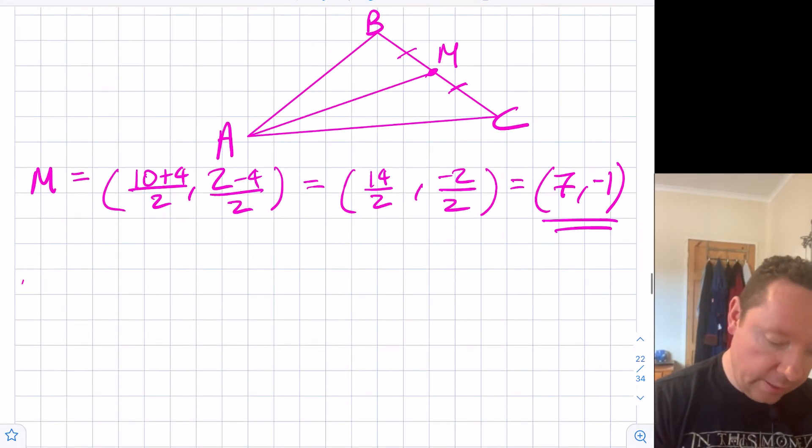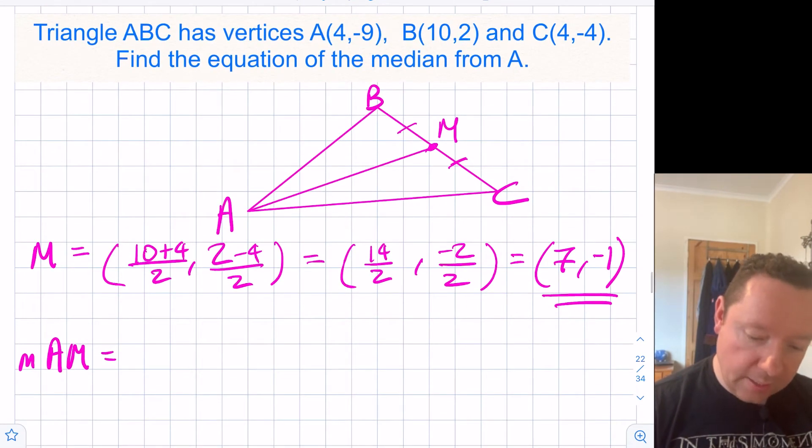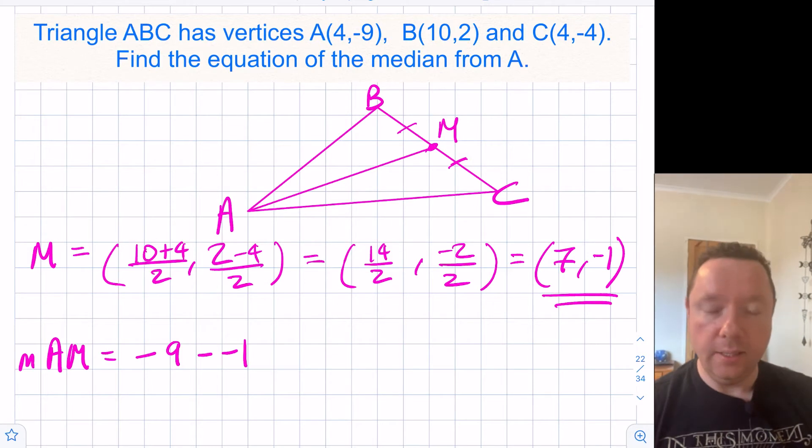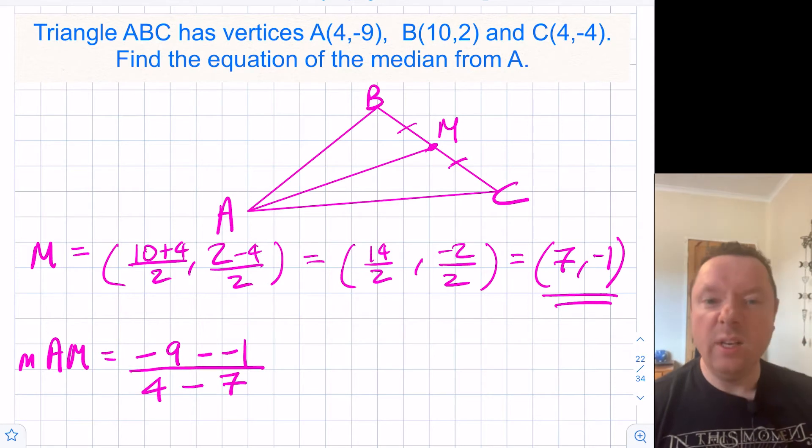So if I write this as the gradient between A and M, well remember A is (4, -9), so we've got -9 minus -1, that's y2 minus y1, over x2, that's 4 minus 7. Or alternatively you could have went the other way: -1 take away -9 over 7 take away 4. It makes no difference really.